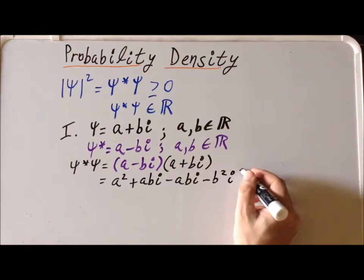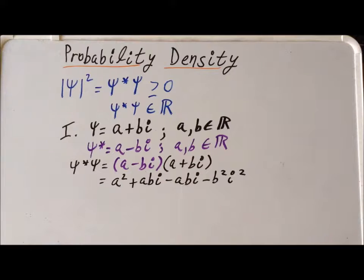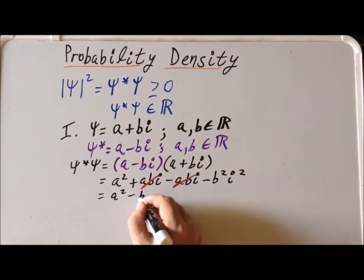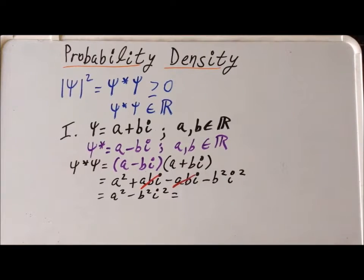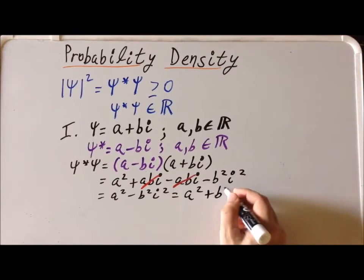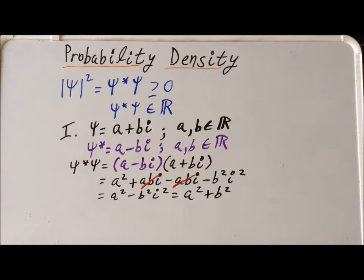So we can multiply this out formally. We notice that we have plus a bi and minus a bi in the center, so those add to zero. We're left with a squared minus b squared i squared. But recall that since i is the square root of minus 1, i squared equals minus 1. So minus b squared times minus 1 simplifies this to a squared plus b squared. We've determined that the probability density psi star psi simplifies to a squared plus b squared.